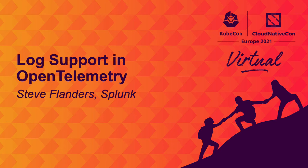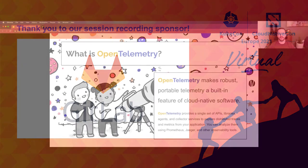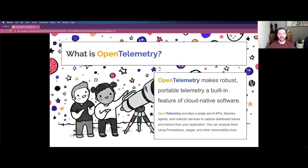Hello, and welcome to this session, Log Support and OpenTelemetry. OpenTelemetry is all about making robust portable telemetry data a feature of cloud-native software. That means the goal is to provide a set of APIs, libraries, agents, and collector technology that's bundled automatically and available so that you can easily generate, emit, and collect the telemetry data that you need in order to observe your systems.